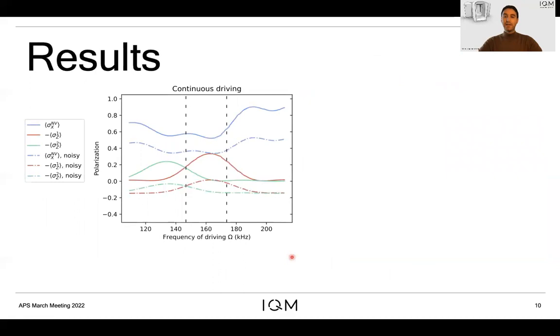Now let us look at some simulation results. In this first plot we have plotted two simulation sets under the continuous driving. One represented by continuous lines corresponds to a noiseless simulation, basically with the noise parameters set to zero, and the other one with dash lines corresponds to a noisy simulation with the noise model described above with state-of-the-art parameters.